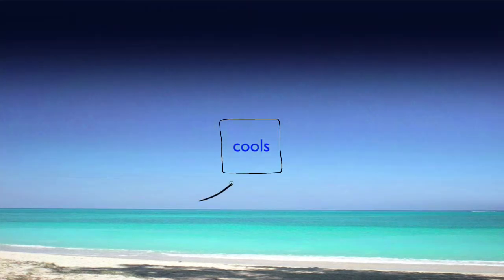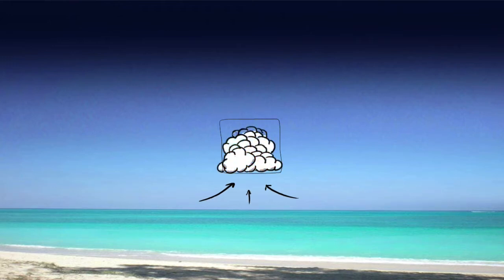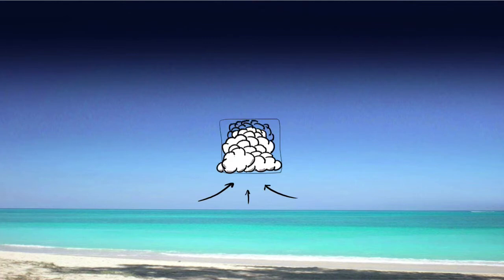As it cools, any moisture condenses to form a cloud. From chemistry, we know that the condensation of water releases energy. This helps to warm the cloud, which makes it climb higher.